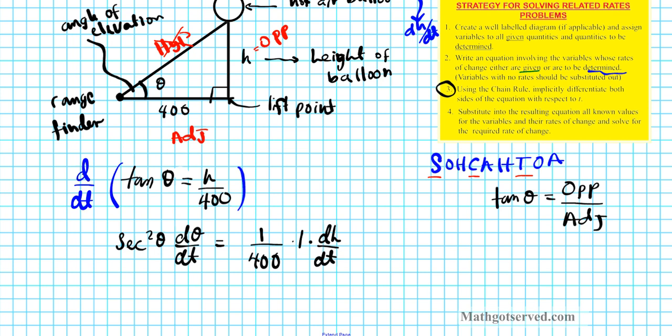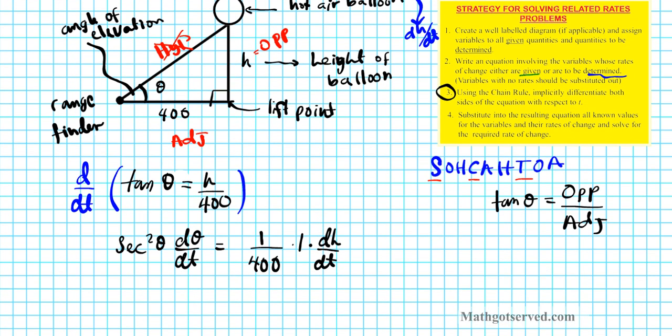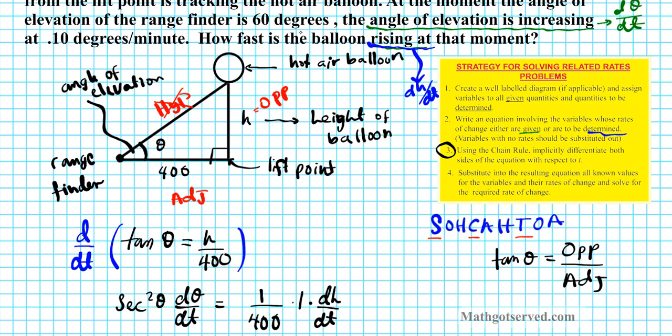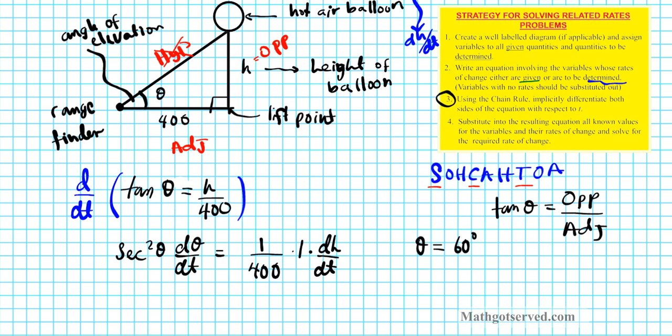So we know what theta is. We're asked to find how fast the balloon was rising when the angle of elevation was 60 degrees and the angle of elevation was changing at 0.1 degrees per minute. So that tells us that theta is 60 degrees and dθ/dt is 0.1 degrees per minute. Okay? Now let's substitute and solve. This is now just a simple algebra problem.